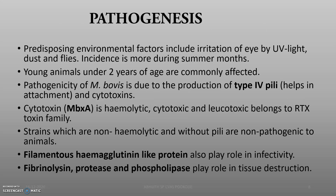Pathogenesis: predisposing environmental factors include irritation of the eye, UV light, dust, and flies. The pathogenicity of Moraxella bovis is due to the production of type 4 pili, which help in attachment to animal tissue. Cytotoxin MbxA is hemolytic, cytotoxic, and leukotoxic — it belongs to the RTX toxin family and is the main pathogenic antigen. Filamentous hemagglutinin-like protein also plays a role in infectivity.